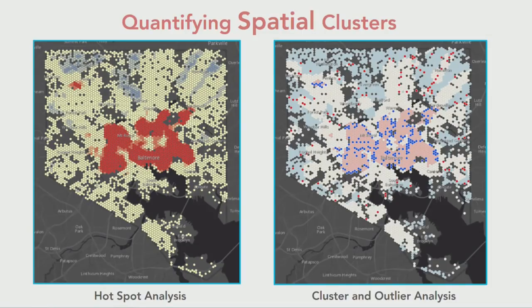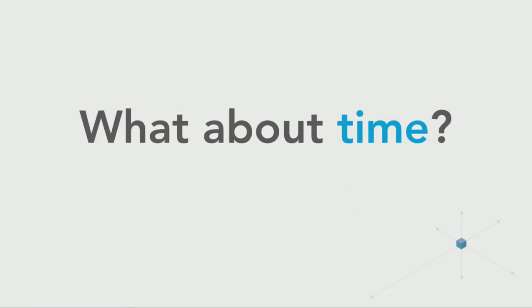In our Spatial Data Mining 1 session right before lunch, we talked a lot about quantifying spatial clusters — specifically hotspot analysis and cluster outlier analysis, how those work, and the idea that it's all about looking at spatial neighbors and figuring out if our local average is different enough from our global average to be a hotspot or cold spot, or also looking for high and low outliers. But these spatial patterns are missing one thing: time. How do we incorporate time into our analysis?